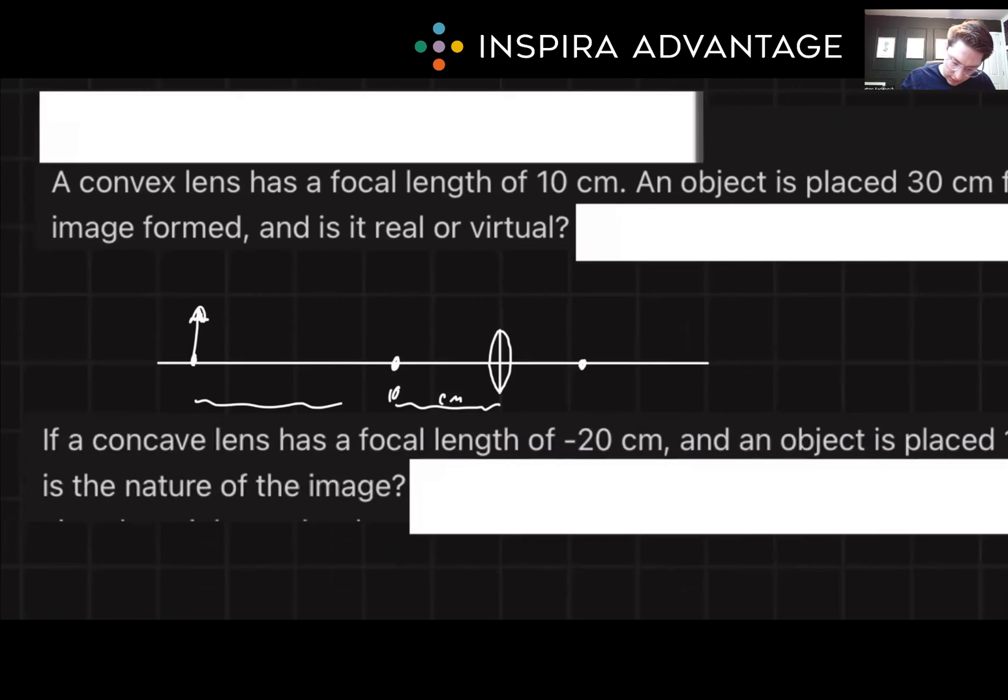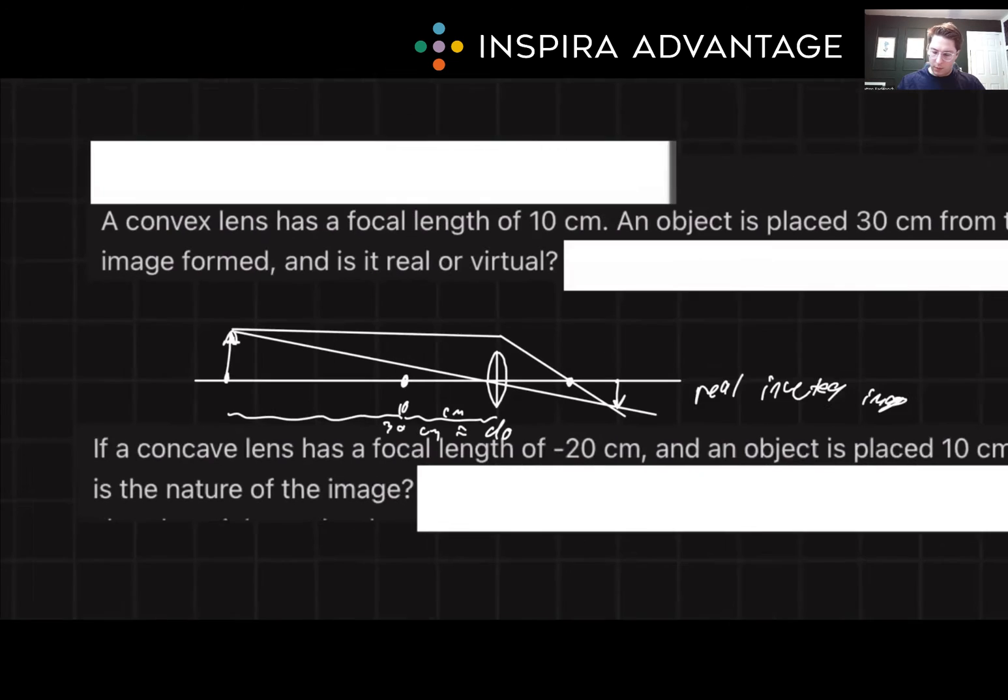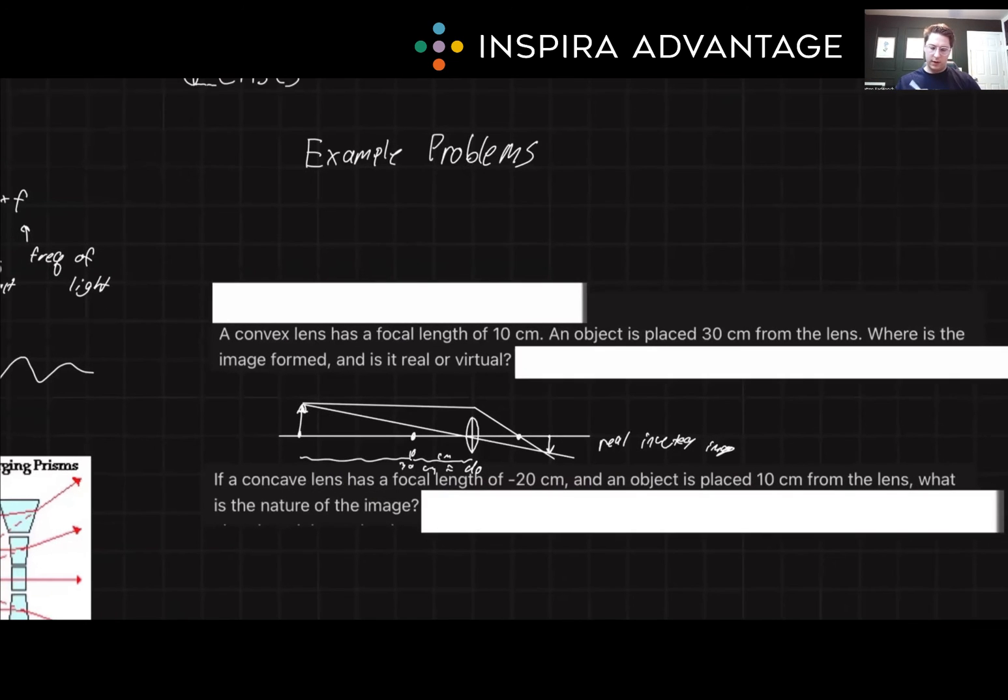So we know that this is 30 centimeters, which also is our DO. So now we can sketch out what's going on. So I didn't make my mirror quite big enough, but I know what should happen. This will go straight and on through. It will also go straight through here. So this gives us a rough approximation. So we see that we have a downward arrow and that everything is converging. So because they're converging, it is real. So this is a real inverted image.